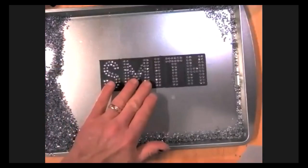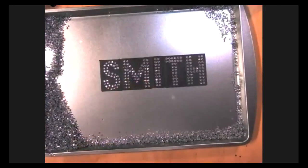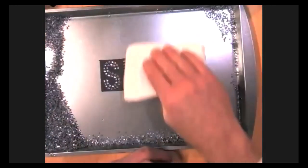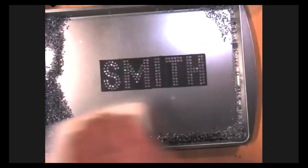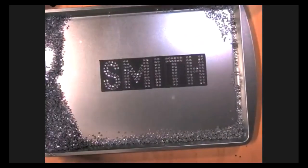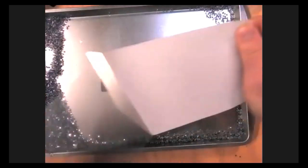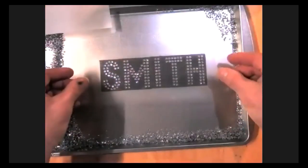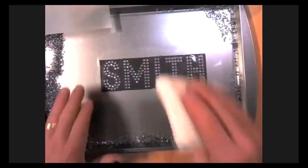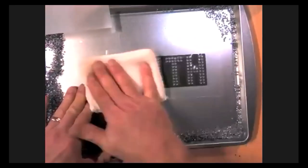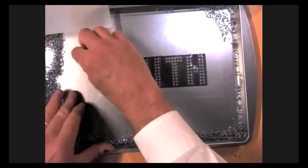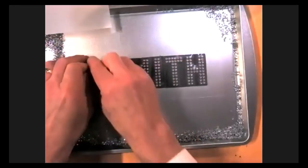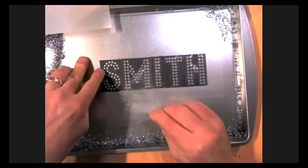So we're going to grab our hot fix tape again. Just double checking. I don't have any strays. Peel back the tape. Set the backer to the side. And lay that right on top of your rhinestones. Rub them down with a sweeping pad. And then peel back low and slow again.